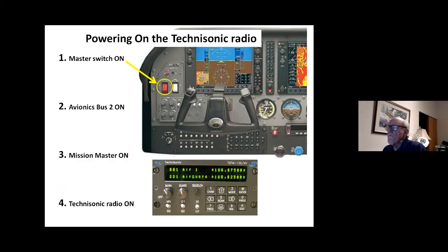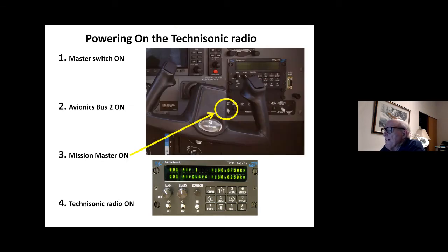Powering on the Technasonic radio, there's four switches in the chain between the battery and the alternator and the radio. Two of these are normally going to be taken care of on the pre-flight: master switch on, avionics bus on, particularly avionics bus two. That's where the mission master power is located. It's kind of hard to see behind the yoke. I couldn't get a really good picture of that mission master DC panel, which is right underneath the Technasonic radio. But on the left side is the mission master that turns on the power to all the rest of the circuit breakers and switches on this panel.